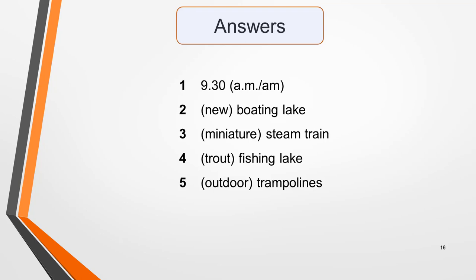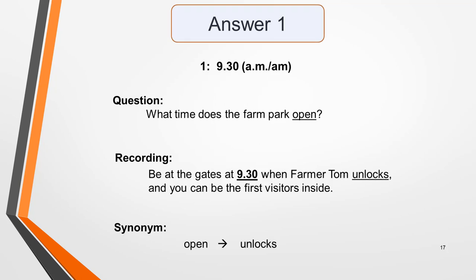Here are the correct answers. The words in brackets are correct but optional. Pause the video while you check them against your own answers, then we'll go through them one at a time and examine the language that makes them correct. Answer 1 is 9.30 or 9.30am. The question asks: what time does the farm park open? The recording says: be at the gate at 9.30am when Farmer Tom unlocks and you can be the first visitors inside. The synonym used is 'unlocks' for 'open' — this is a typical example of how information will be paraphrased in the recording.